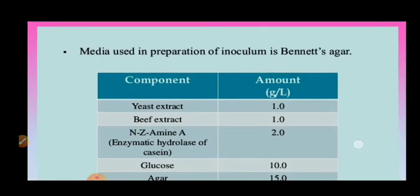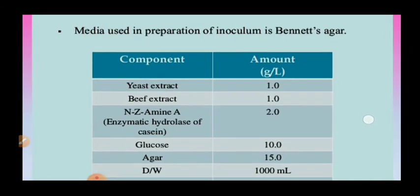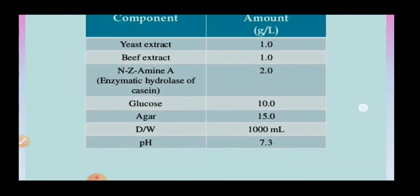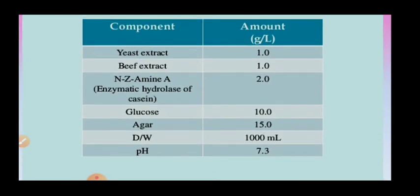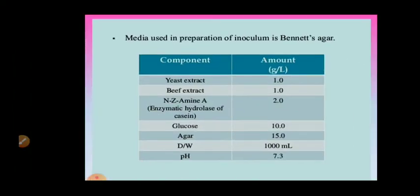The medium used for inoculum is Bennett's agar, which is considered the best medium for inoculum build-up. It contains yeast extract 1 g/L, beef extract 1 g/L, enzymatic hydrolysate of casein 2 g, glucose 10 g, agar 15 g, dissolved in 1 litre distilled water. The pH is adjusted to 7.3.